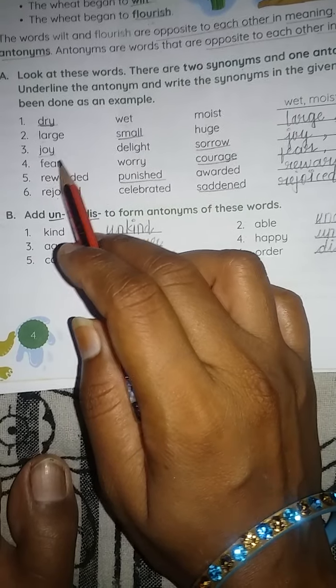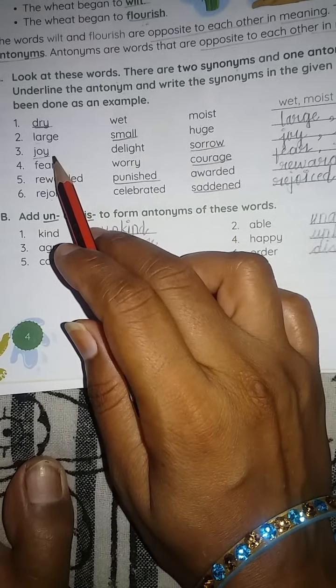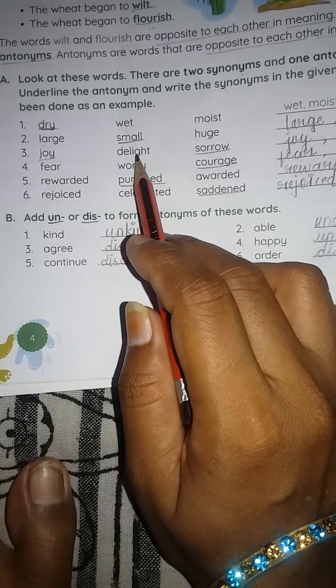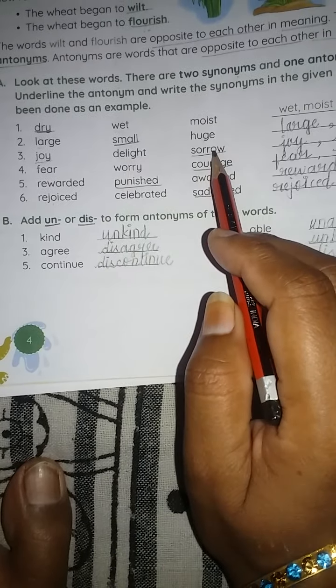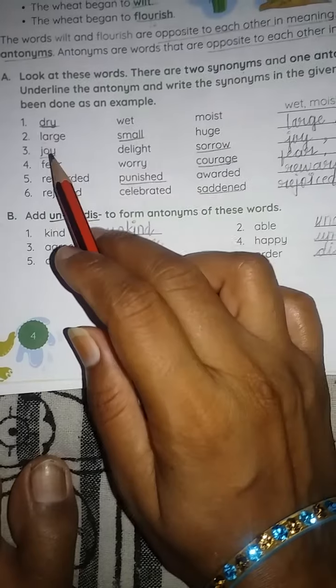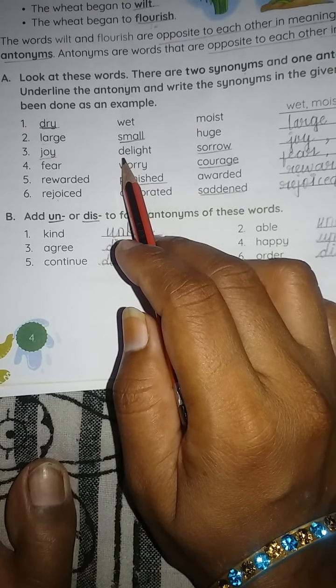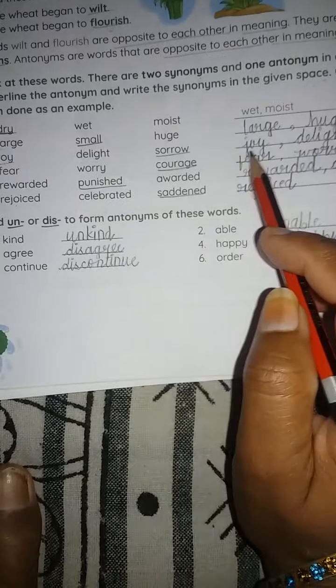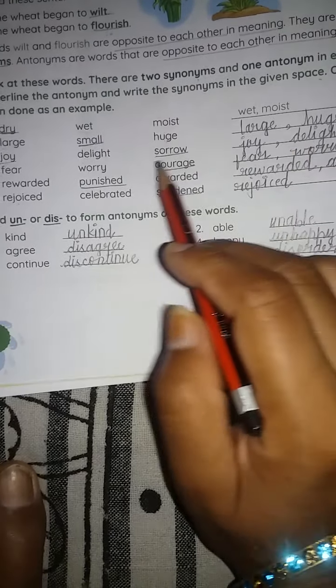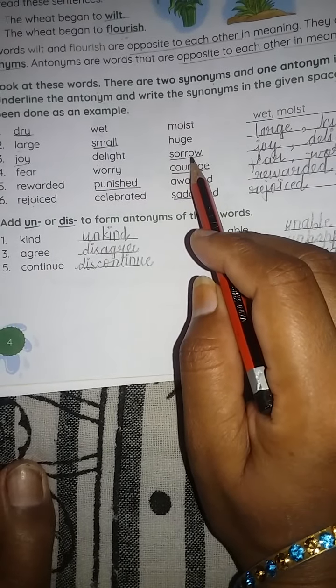Third one: joy, delight, sorrow. Joy means hota hai khushi, delight bhi khushi hota hai. Sorrow means dukh. So joy and delight, they have the same meaning. So these two are synonyms and we will write them here. Joy, delight. And sorrow is the antonym, so we just underline it.